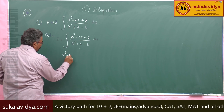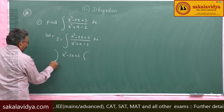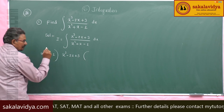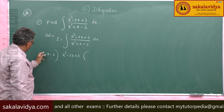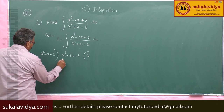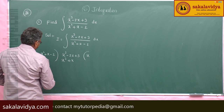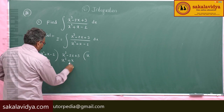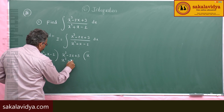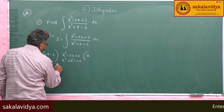Dividing x³ − 2x + 3 by x² + x − 2: x³ divided by x² gives x. So we get x times (x² + x − 2), which is x³ + x² − 2x. Subtracting, we proceed with the next step of the long division.